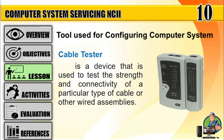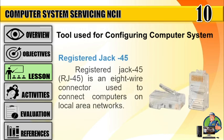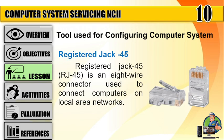Number 4: Cable Tester — a device that is used to test the strength and connectivity of a particular type of cable or other wired assemblies. Number 5: RJ45, or registered jack — is an 8-wire connector used to connect computers on local area networks.